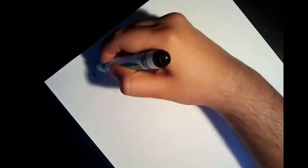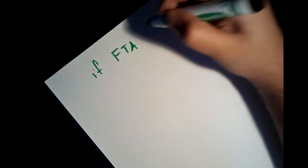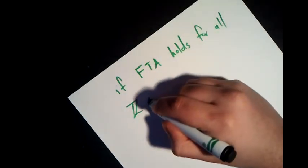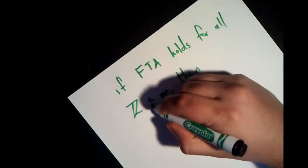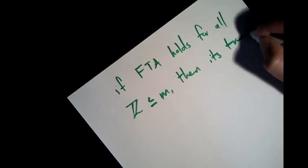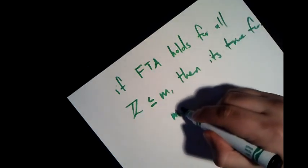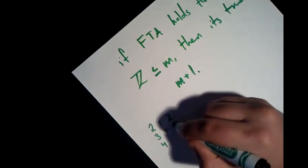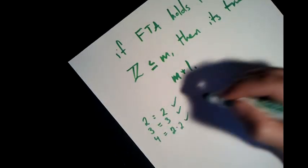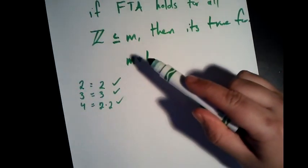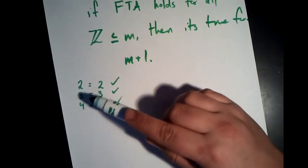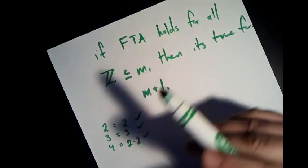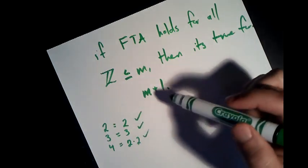We're going to use induction to show that if the Fundamental Theorem of Arithmetic holds for all integers less than or equal to m, then it's true for the next integer up, which is m plus 1. So let's remind ourselves of our base cases: 2 equals 2, check; 3 equals 3, check; 4 equals 2 times 2, check. It's true for all of those. So let's let m equal 4 — it is true for all integers less than or equal to 4: 2, 3, and 4. We're not using 1 because we stated we're not going to. So is it true for 5, or m plus 1 in general? We want to prove that if it's true for all integers less than or equal to m, then it's true for m plus 1.